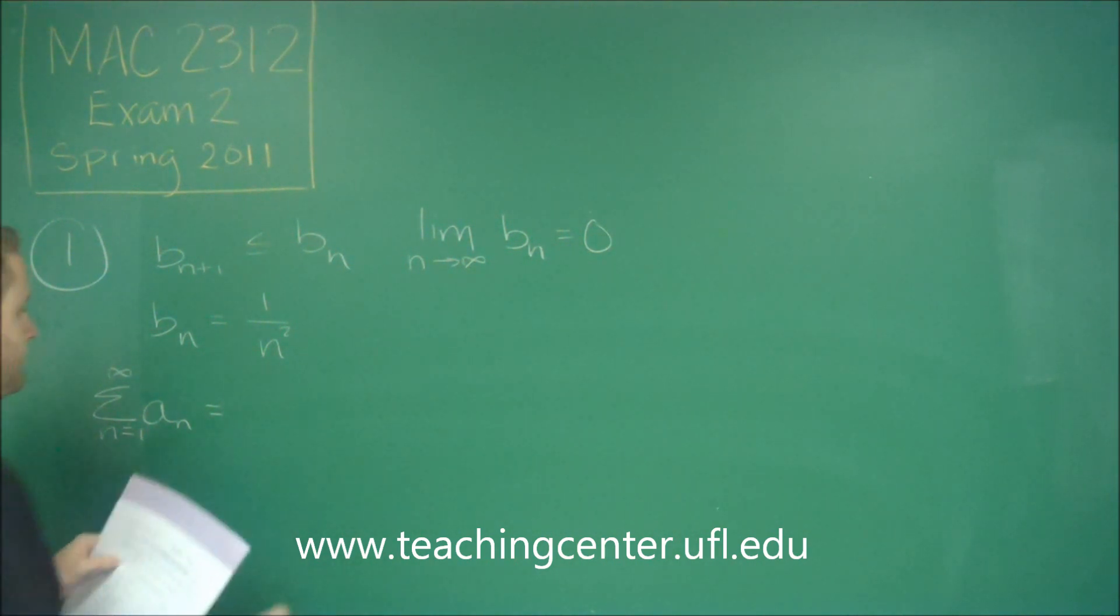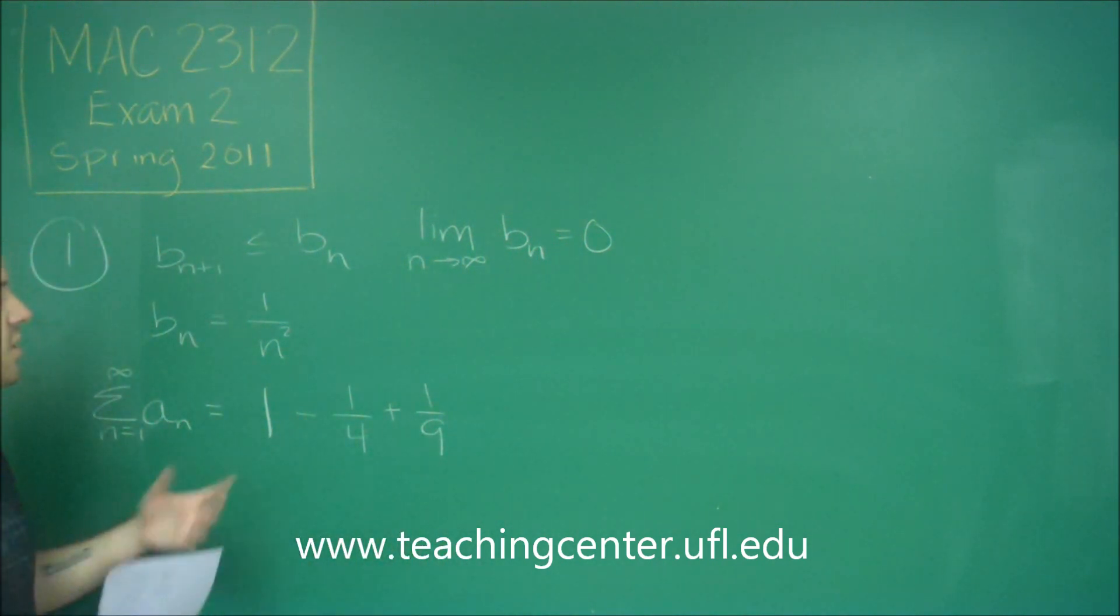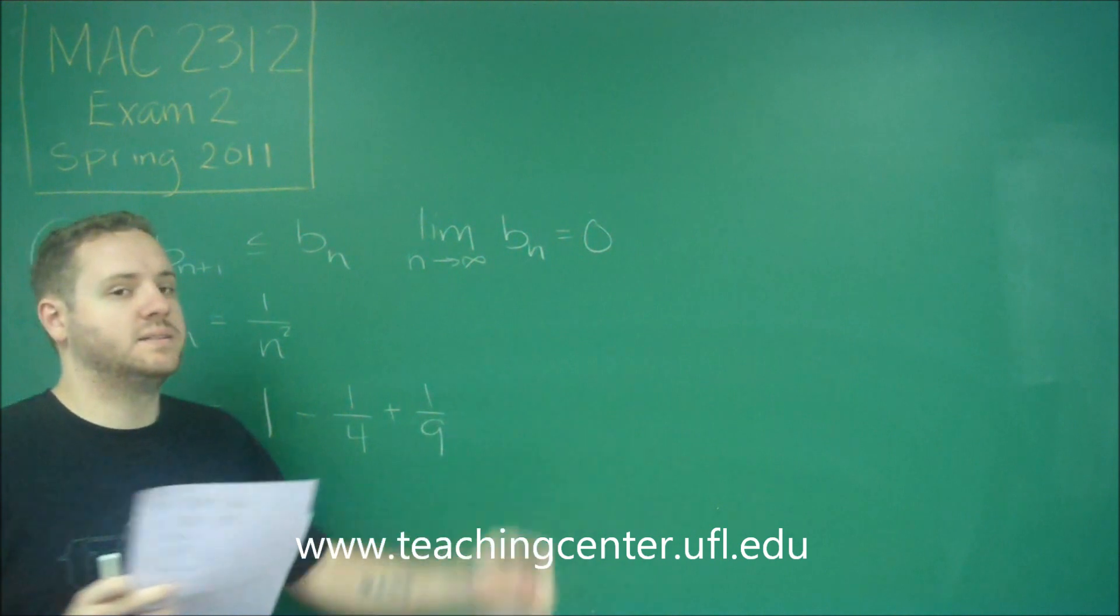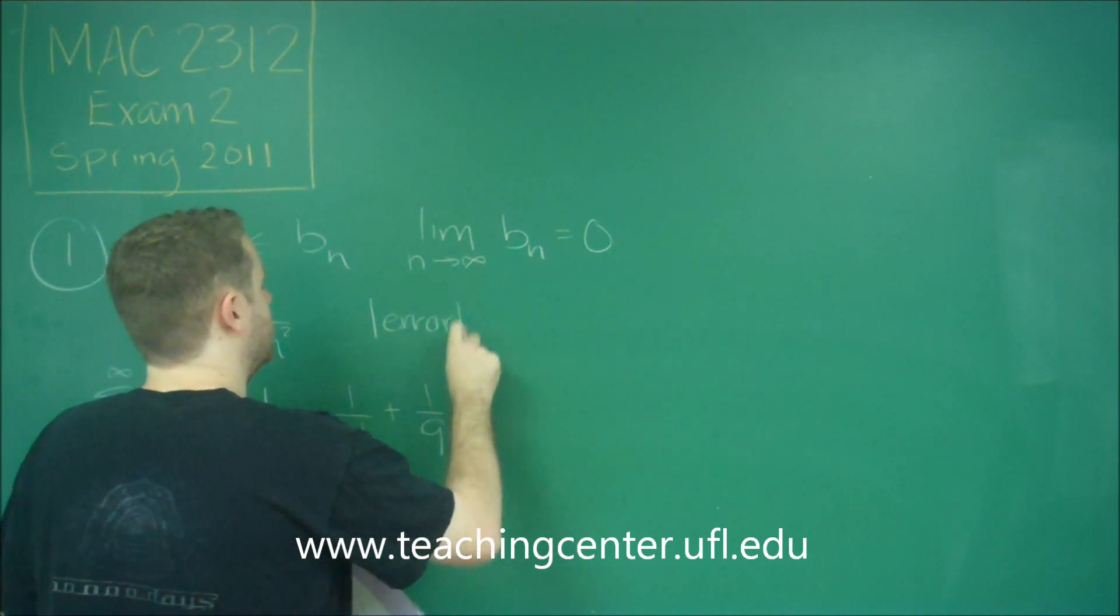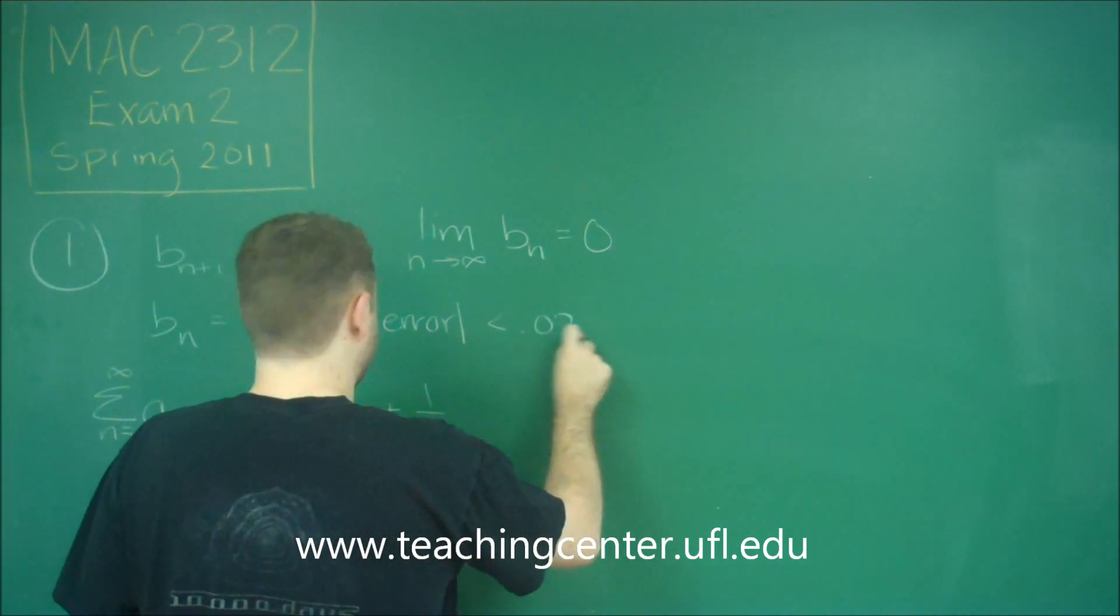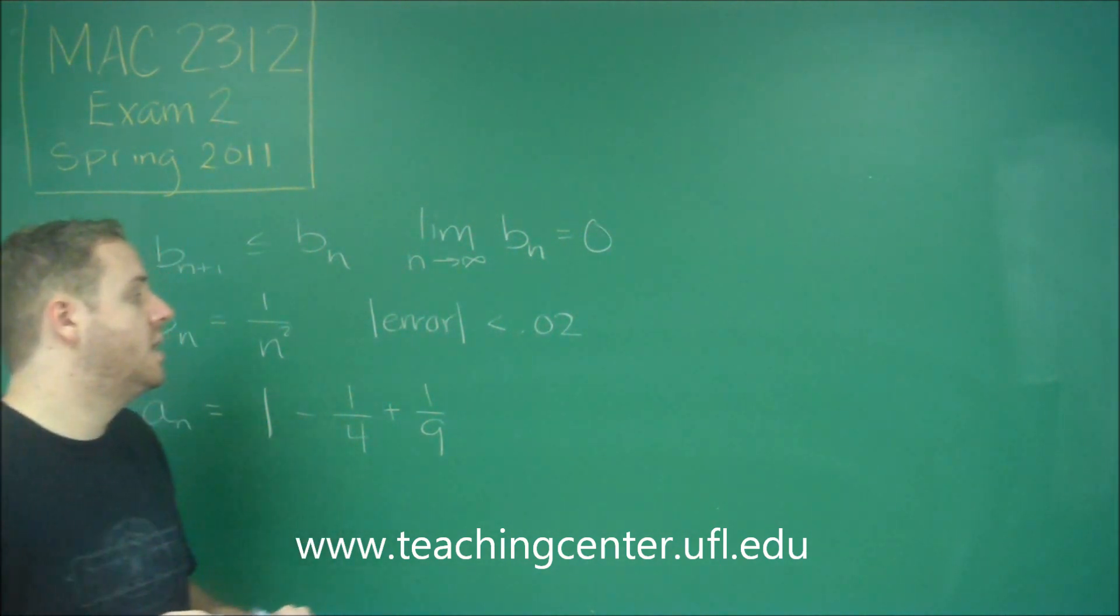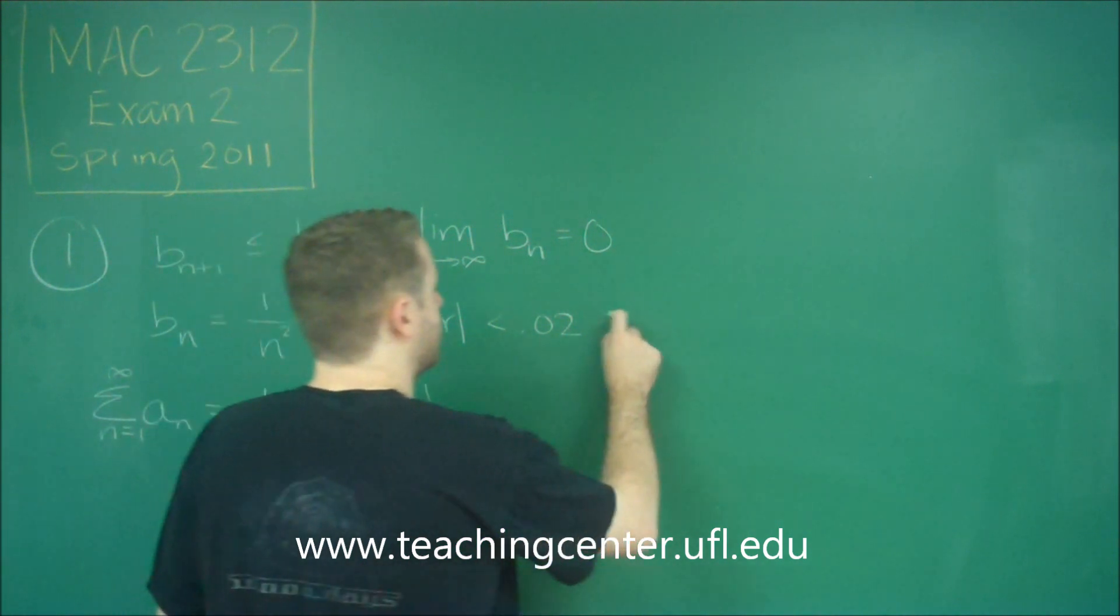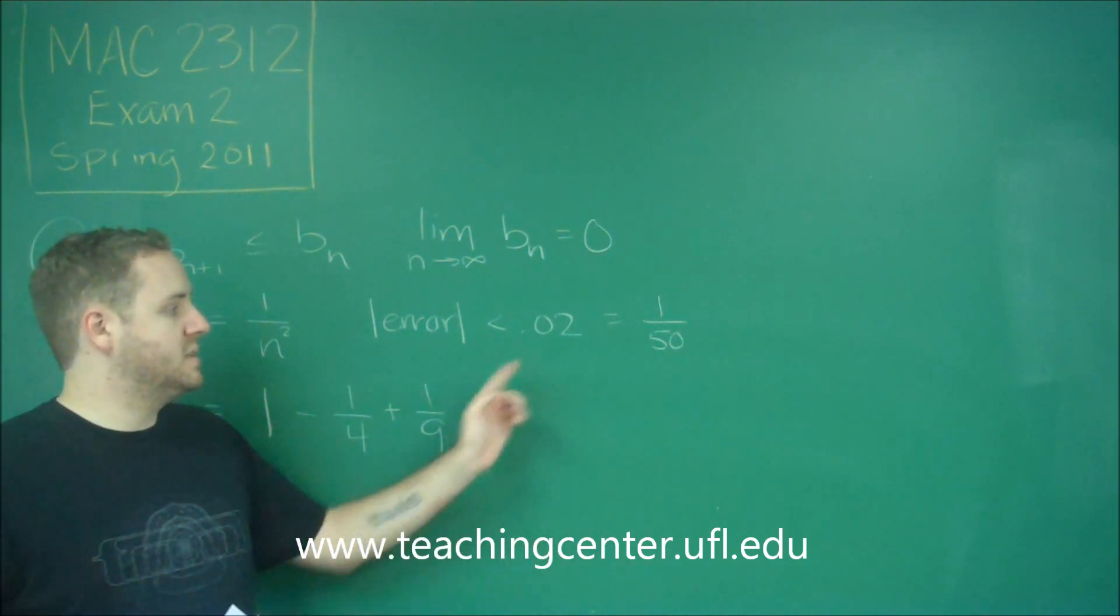So our first term is going to be 1 minus 1 fourth, plus 1 ninth, and so on. This is just an alternating reciprocal squares series. What we're doing is we're going to keep going until we get a term that's less than 0.02. However, it might be useful to rewrite that since what we're writing here are fractions, not decimals. So if our error is less than 0.02, what you might want to consider is okay, what fraction does that represent? And then we can just look for a fraction that's smaller than that. 0.02 is 2 over 100 or 1 over 50. So we're going to keep going until we get a fraction whose absolute value is less than 1 over 50.